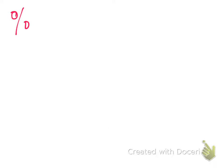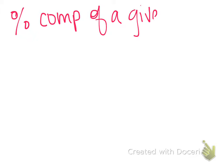Now let's look at percent composition of a given sample — before we assumed we were looking at one mole of a substance. We said if we've got one mole of sodium chloride, it's about 30-something percent sodium and 60-something percent chlorine by mass. Now we're going to look at a specific sample, whether it's moles or grams, using ratios from our chemical formulas. Let's start with an example and work through it.